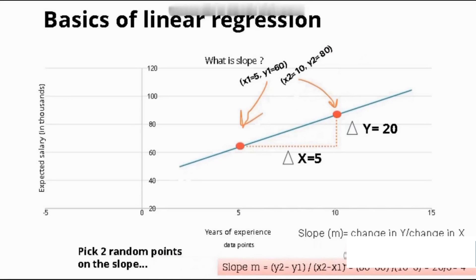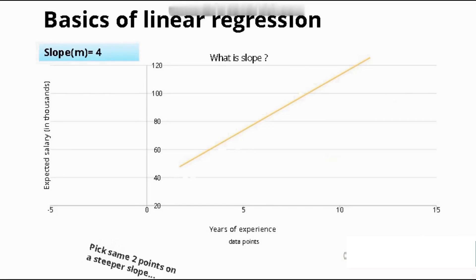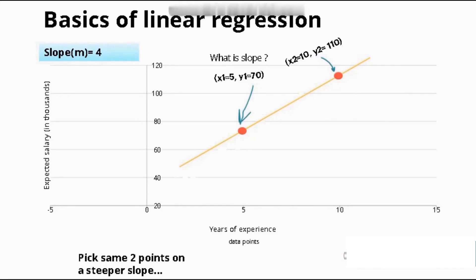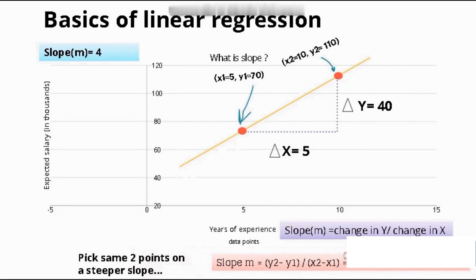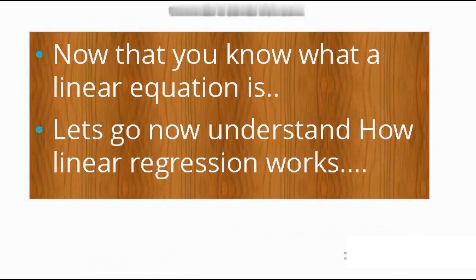Keeping this slope in mind, we will run the illustration on a steeper slope. Pick the same two points, plug the values in, and find the change in y — y₂ minus y₁ — then change in x — x₂ minus x₁. The change in y is 40 and the change in x is 5, meaning for every five years of experience salary increases by 40k.